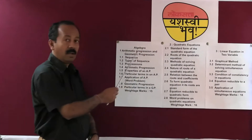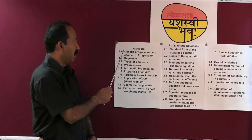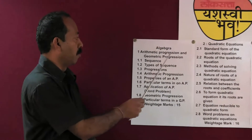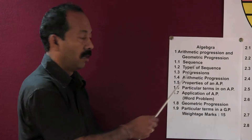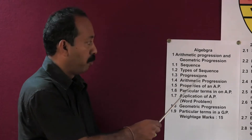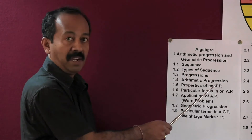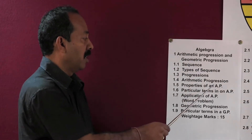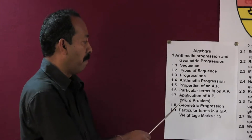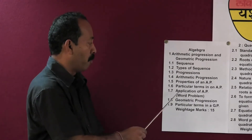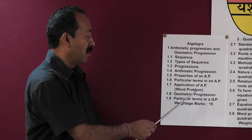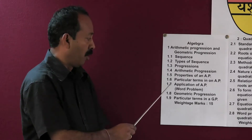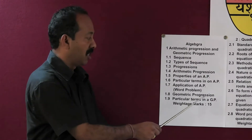Please refer your textbook. Algebra Chapter 1: the name of the chapter is Arithmetic Progression and Geometric Progression. The important contents are: Sequences, Types of Sequences, Progression, Arithmetic Progression, Properties of an Arithmetic Progression, Particular terms in an Arithmetic Progression, Application of Arithmetic Progression, Word Problems, Geometric Progression, and Particular terms in a Geometric Progression. The weightage of marks for this chapter is 15.